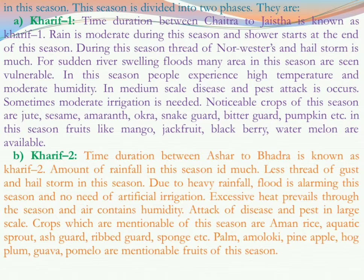Notable fruits of Kharif 2 are palm, amaloki, pineapple, hog plum, guava, and pomelo. So the total Kharif season is divided into two phases — you can easily understand that it is a mixture of hot and rainy season, that is summer and rainy season of Bangla. In agricultural terms, this combined period is known as the Kharif season.